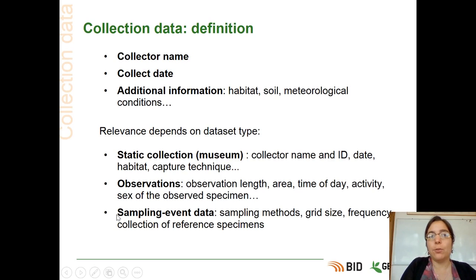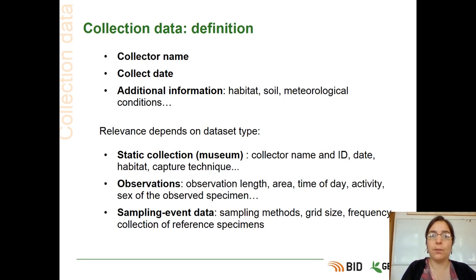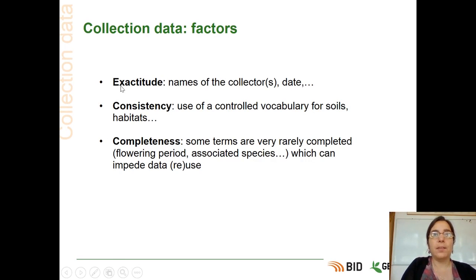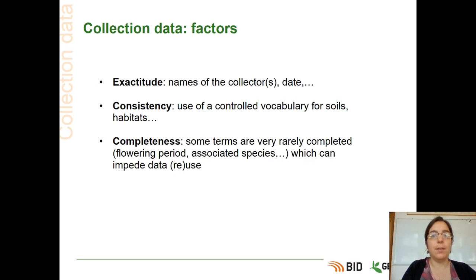You can also have some data that are more sampling event data. Here you will need to document the sampling methods, the grid size, the frequency, the collection of reference specimens, and anything else related to the context of the sampling event. When dealing with collection data, we can have some factors that will have an impact on data quality. We will talk about exactitude — about the names of the collectors or the dates. You have to be sure that the collector's name is well written and that the date is correct.